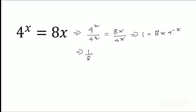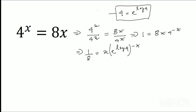So the problem becomes: 1 over 8 equals x times 4 to the power minus x. Now, 4 to the power minus x can be written as e to the power (log 4) times (minus x), since 4 equals e to the power log 4. This is an important remark. So we can write: 1 over 8 equals x times e to the power (minus x log 4).